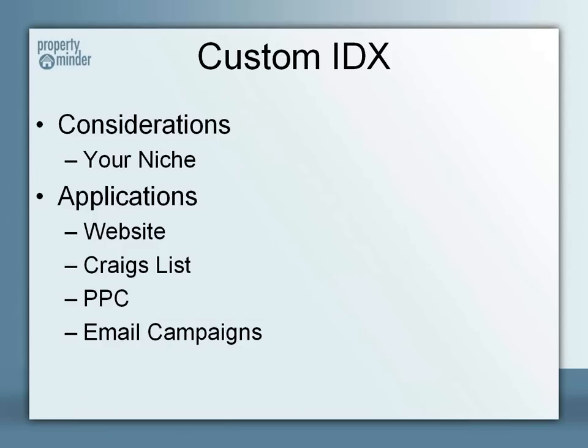You can market on Craigslist, create a whole pay-per-click campaign on Google centered around those specific listings in your custom IDX search, generate email campaigns to your sphere of influence and embed the custom IDX search in those campaigns. You can create a custom IDX search, which assigns its own unique URL for the web, and place it on Craigslist.